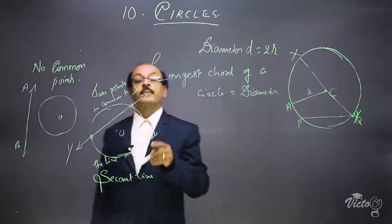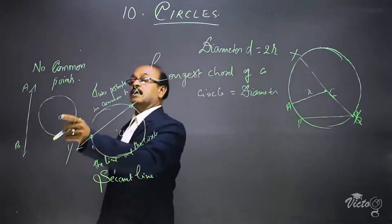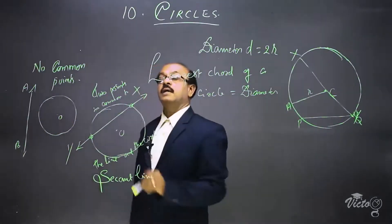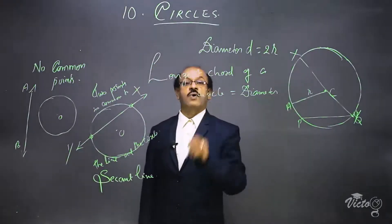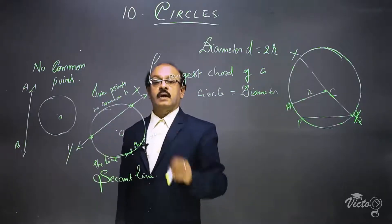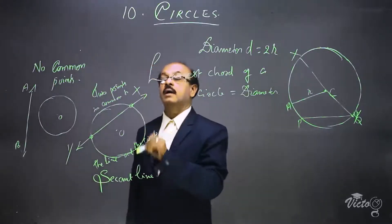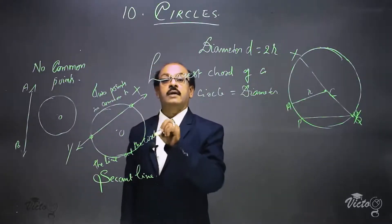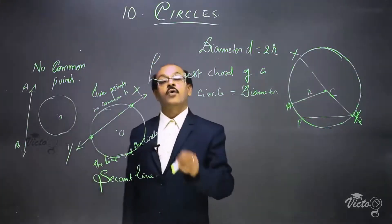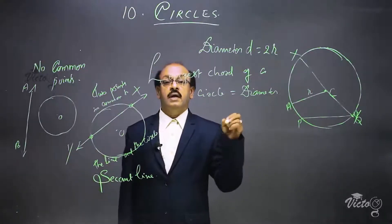To recap: the first way is a circle and a line with no point in common. The second way is a circle with center O and a line XY intersecting the circle at two different points — two points are common to the line and the circle — so line XY is called a secant line. The third case is very important and we are going to study it in detail.